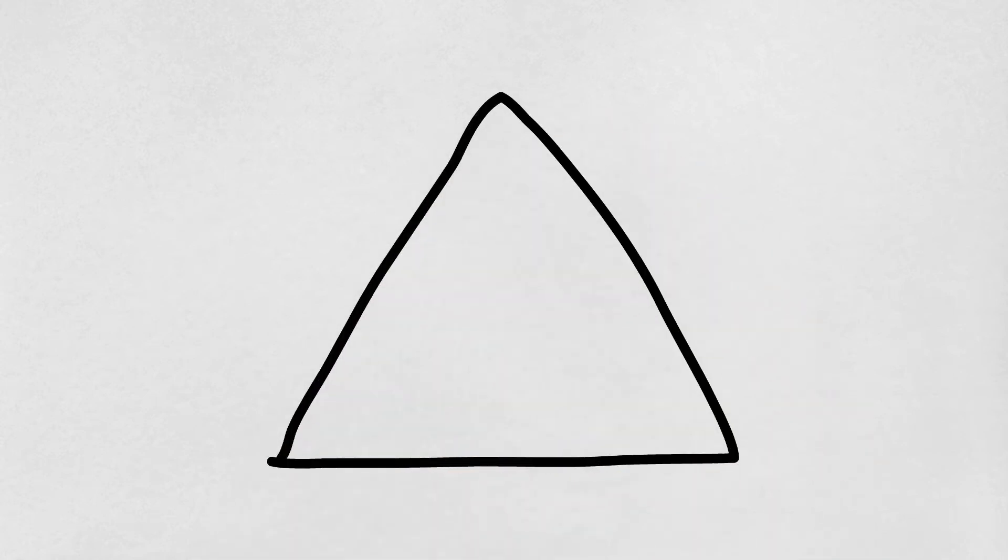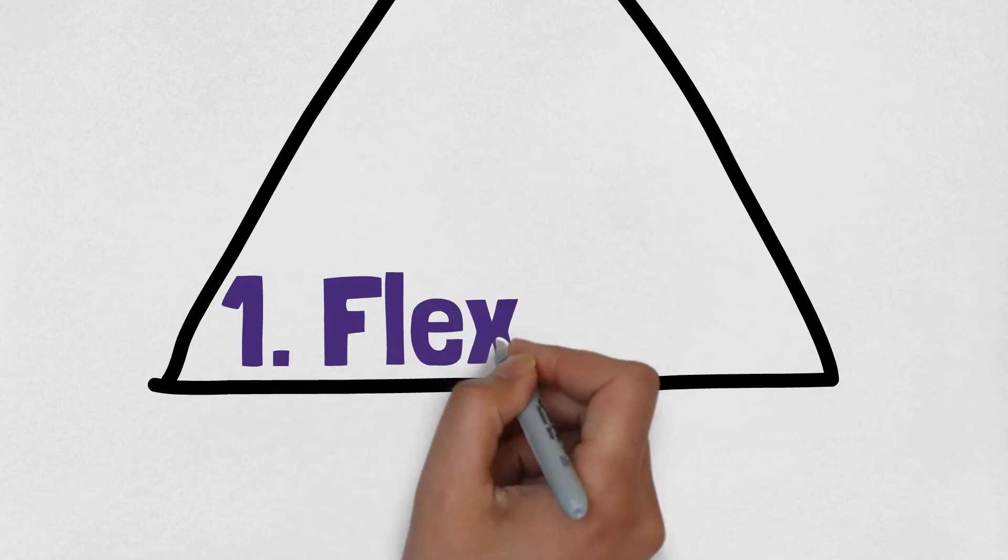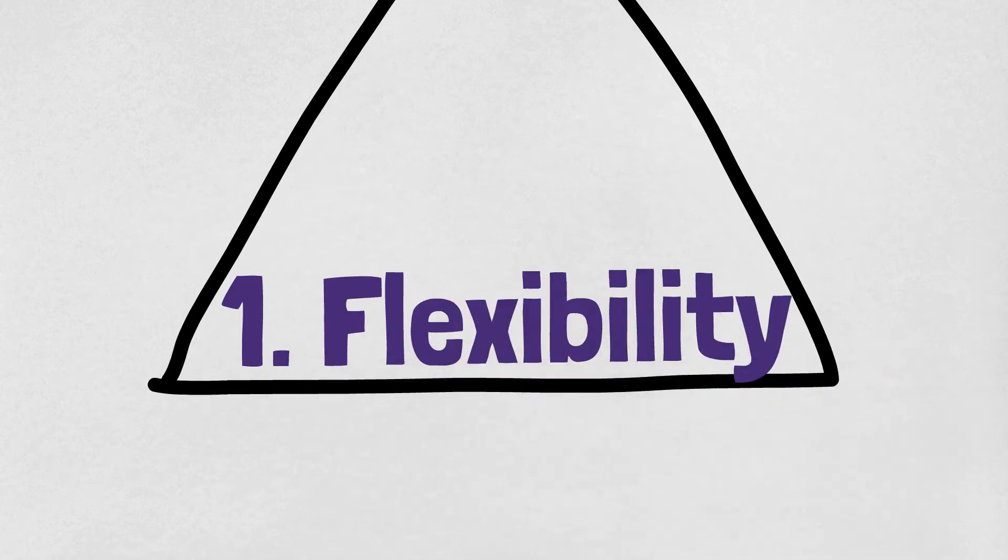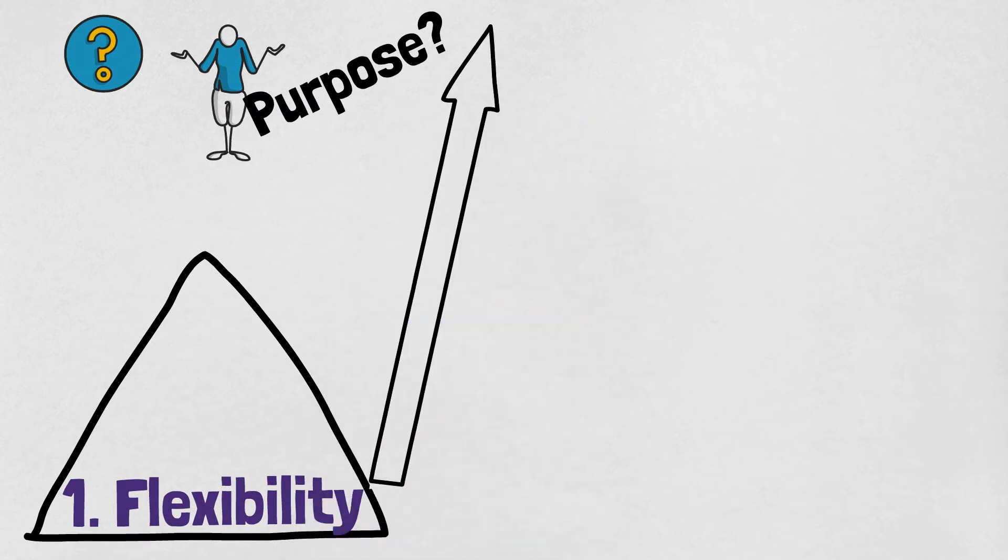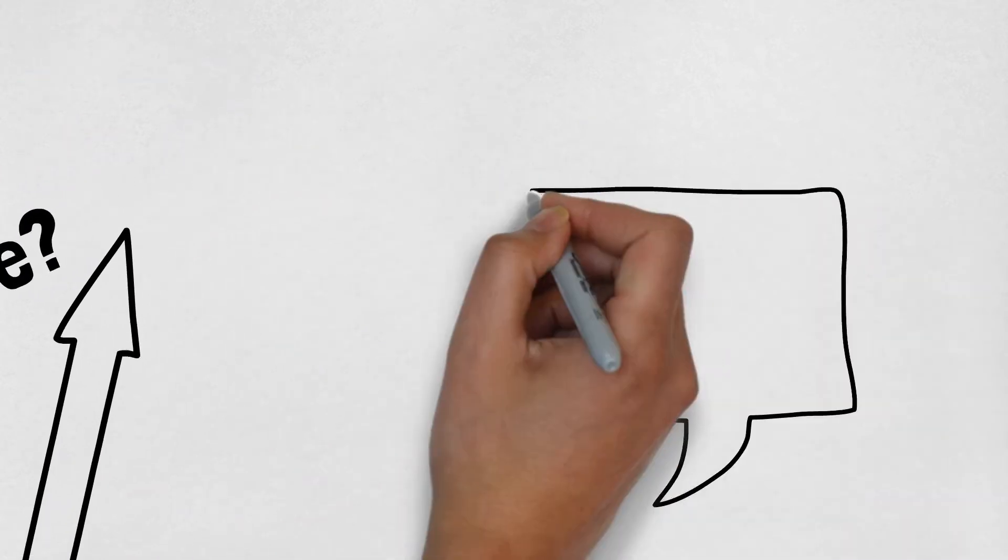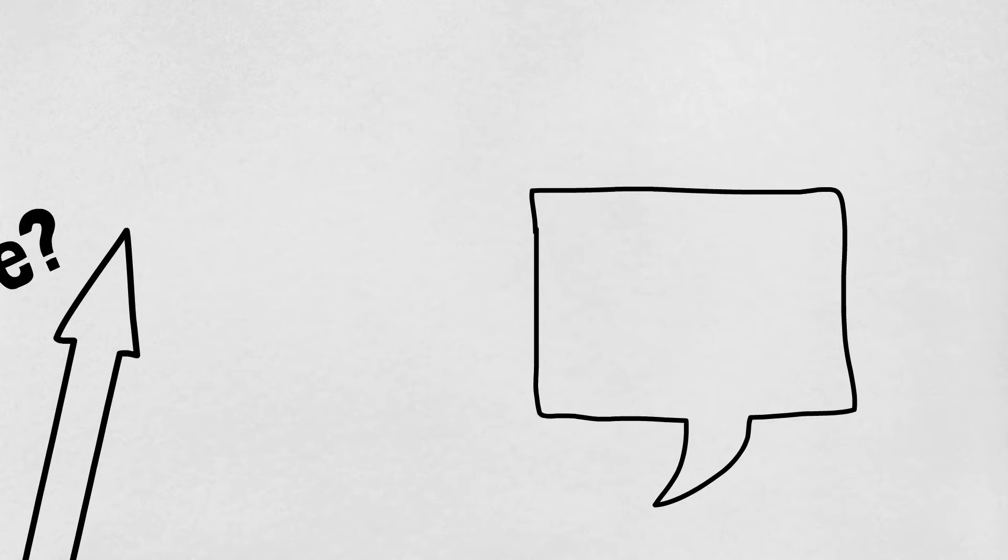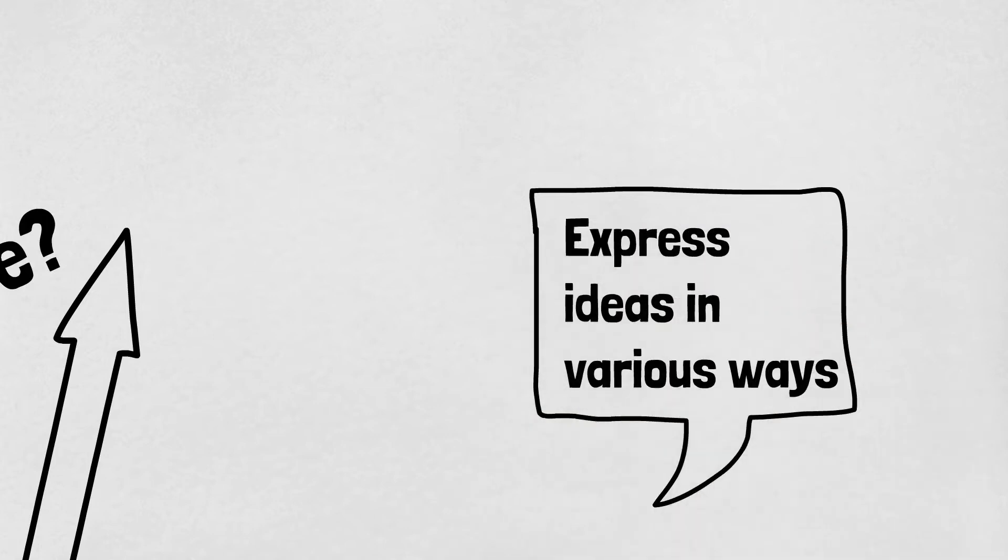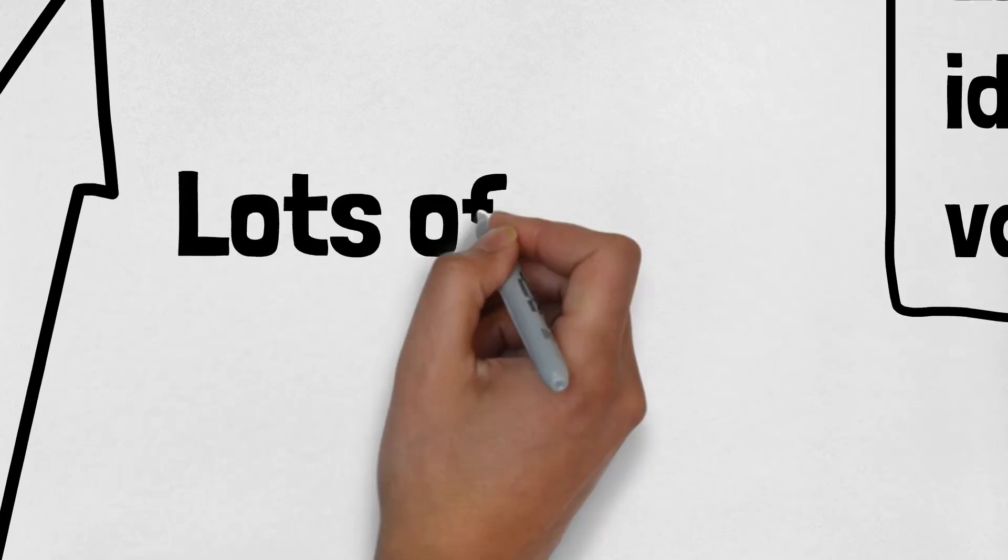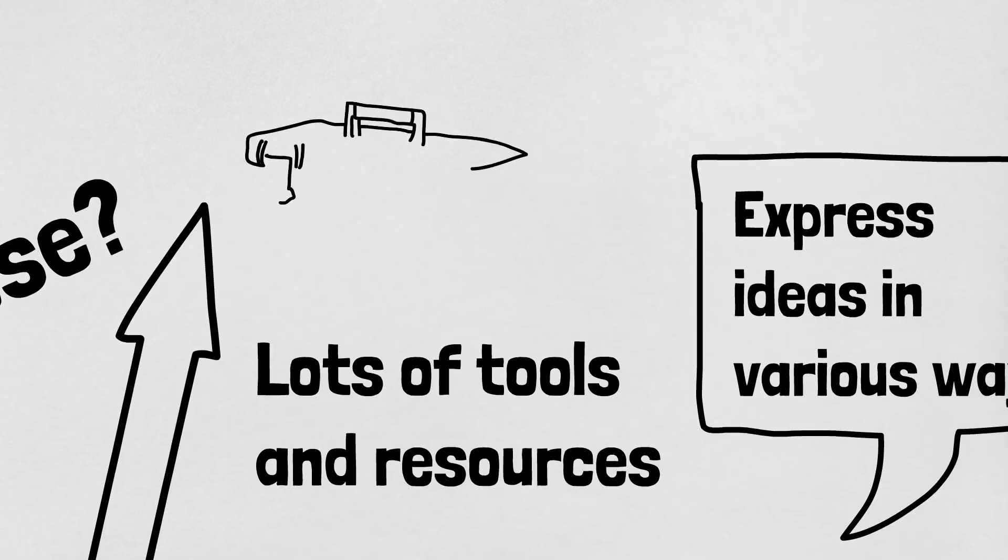In my attempt to define fluency, I will use the model of a pyramid. On the foundation of that pyramid is flexibility. When I think of someone who is fluent in anything, be it a language or mathematics, or even the language of mathematics, fluency is being able to express ideas in various ways. It is having lots of tools and resources that are readily available.